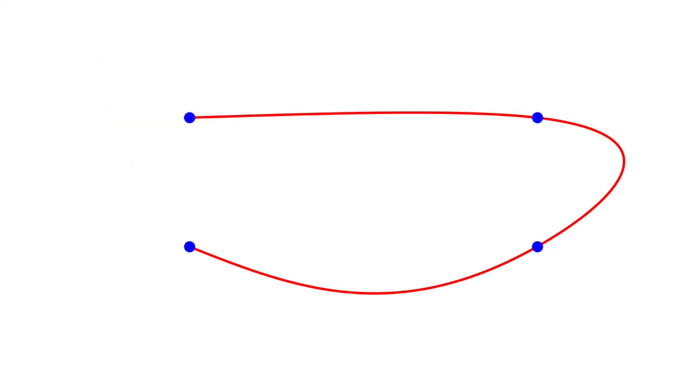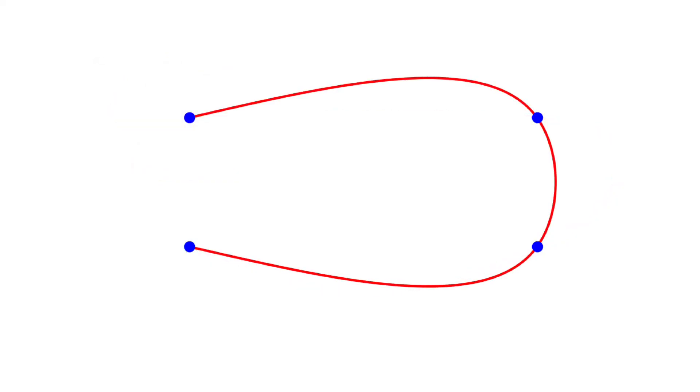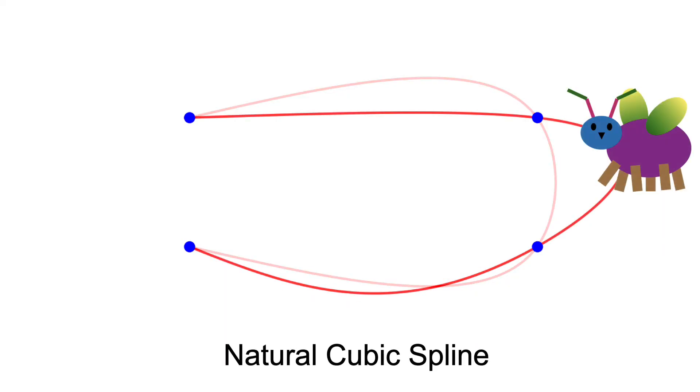Notice the shape of this curve is different compared to the one before. The bug is backing up to allow it to pick up speed for the final leg. This is like how you give yourself a longer runway to reach your maximum speed before a jump. How does the spline know how to do this? How does it know about physics?